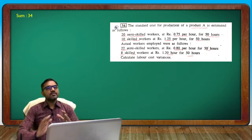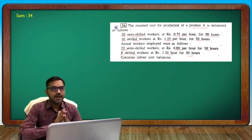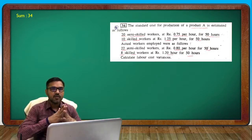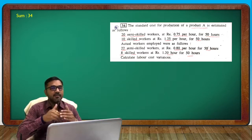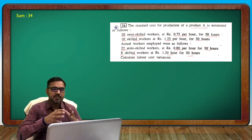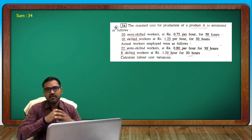The format is: hours into rate, this is equal to cost. Here, 2 types of labor are present: semi-skilled and skilled.